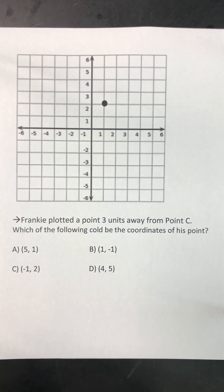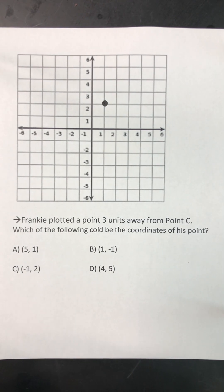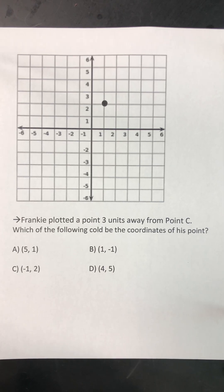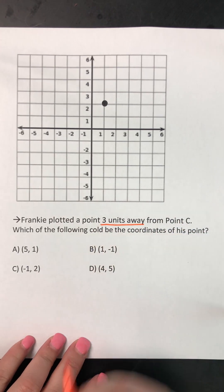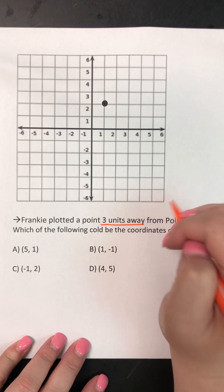All right, now that you have reviewed the coordinate plane, let's talk specifically about some questions you might see on STAR. So in this question it says, Frankie plotted a point three units away from point C.